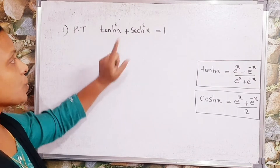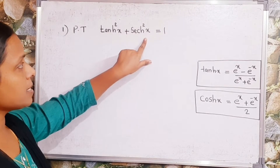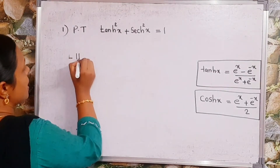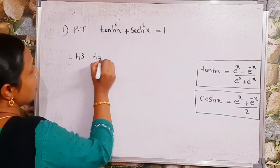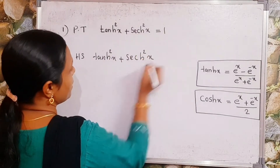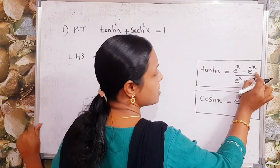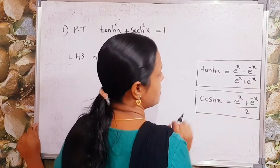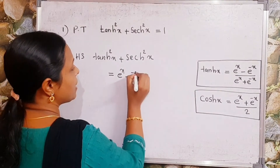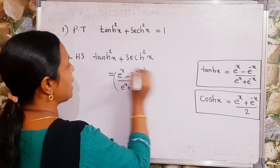Prove that tanh²x + sech²x = 1. First, we take the LHS, that is tanh²x + sech²x. We know that tanh(x) = (e^x - e^(-x)) / (e^x + e^(-x)). So we substitute here: (e^x - e^(-x)) / (e^x + e^(-x)) whole square for tanh²x.